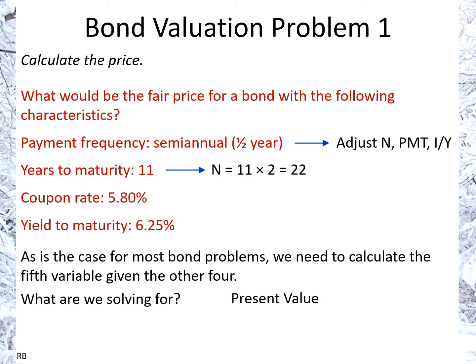The coupon rate should not be mistaken for the yield or I/Y. The coupon rate has to do with the payment — we take the coupon rate and multiply it by the par value or face value of the bond. Since no face value is given, we assume the standard $1,000. So 5.8% times $1,000 means we'd be paid $58 per year. Because we're paid every half year, we divide $58 by 2, giving us a payment of $29. So we take the coupon rate times par value and divide by 2 for semiannual payment.